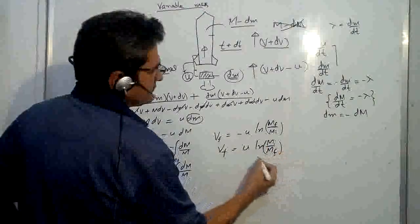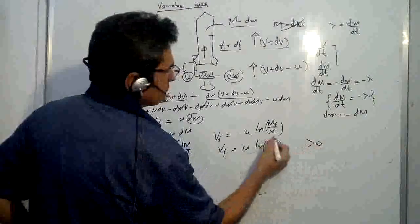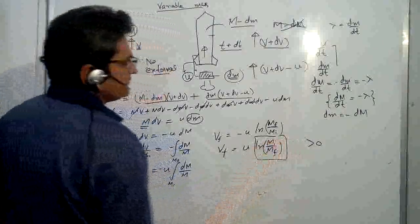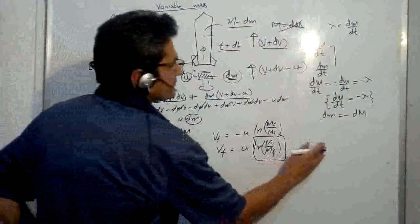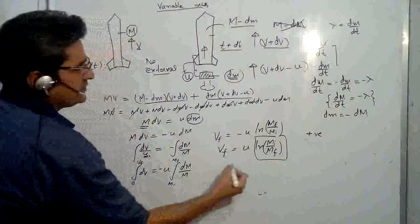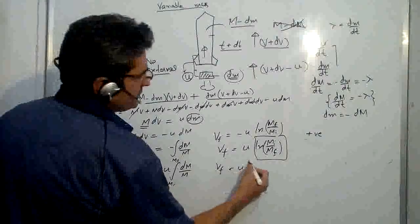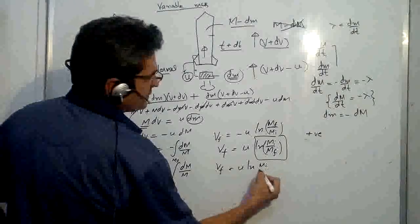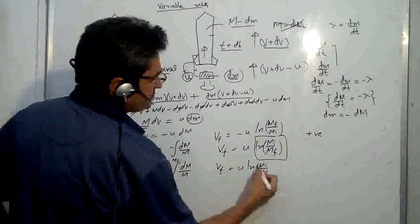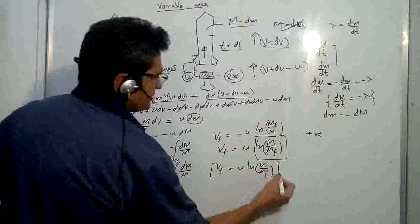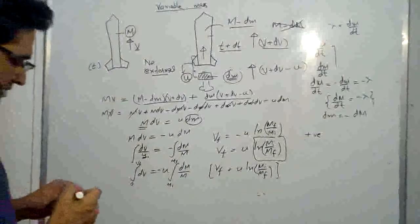So this will always be greater than zero, this will be positive. So v final would be equal to u log m initial upon m final. So this is the relationship of the velocity of rocket presuming the initial velocity was zero.